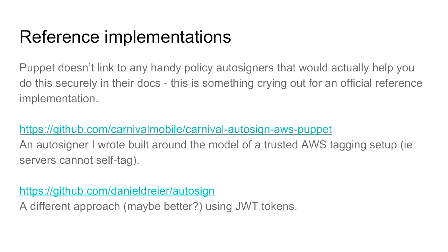It's a really complicated topic and I know there are many Puppet environments where people haven't done this — they're just relying on a shared cert across all servers, which means any server can grab any configuration, or just relying on automatic signing with no validation. It's a really nasty trap, and it would be great if there were a reference implementation, but there isn't — nothing in the Puppet docs says 'use this reference implementation for Amazon' or for Azure.